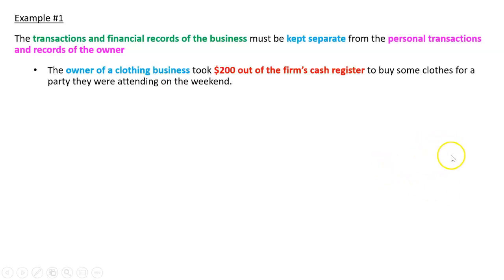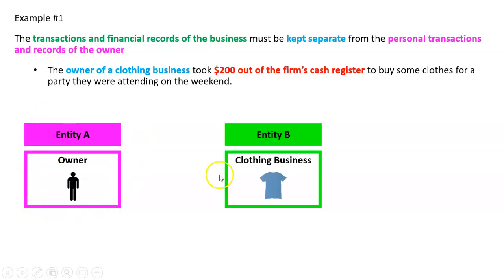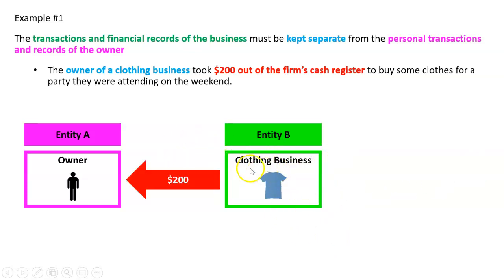The owner of a clothing business took $200 out of the firm's cash register to buy some clothes for a party they were attending on the weekend. We have Entity A — the owner — represented as a separate entity, and Entity B — the owner's clothing business. The owner has taken $200 from the clothing entity and used it for their own personal expenses.